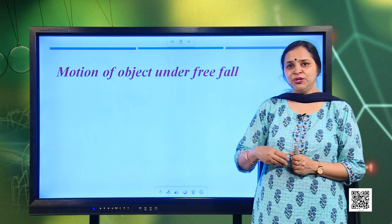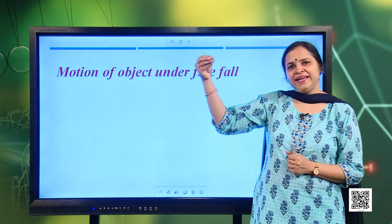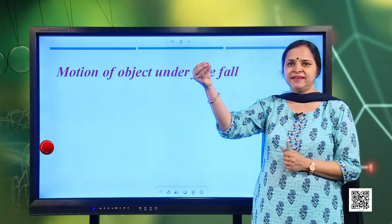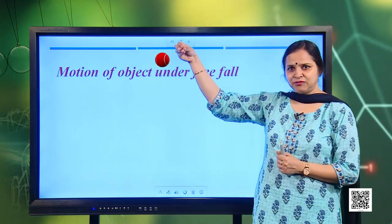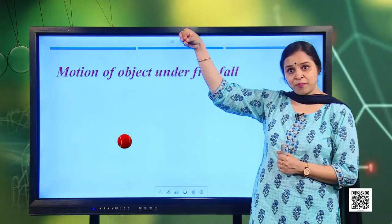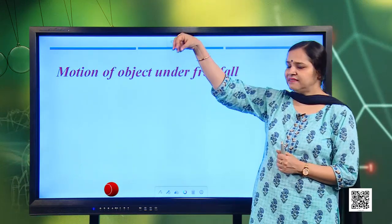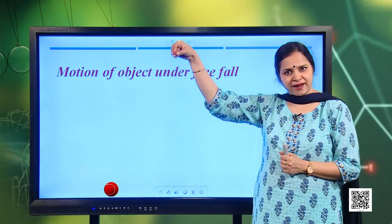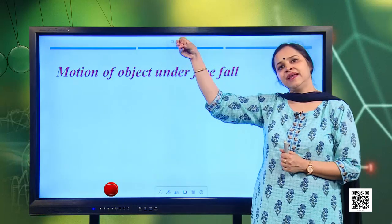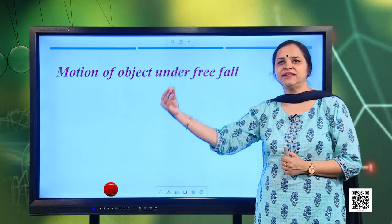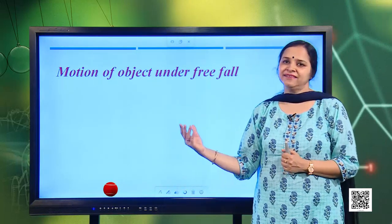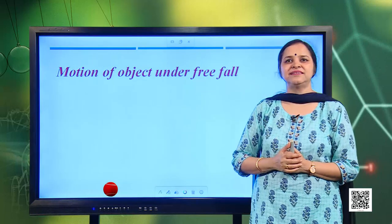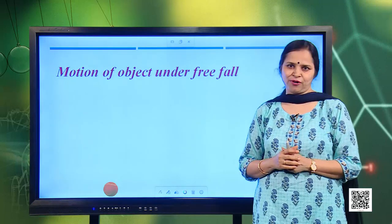Suppose you drop any object, let's say a ball from some height. When you drop a ball, you just release a ball from your hand, then it moves under the influence of gravity alone, and such a motion is termed as free fall motion.